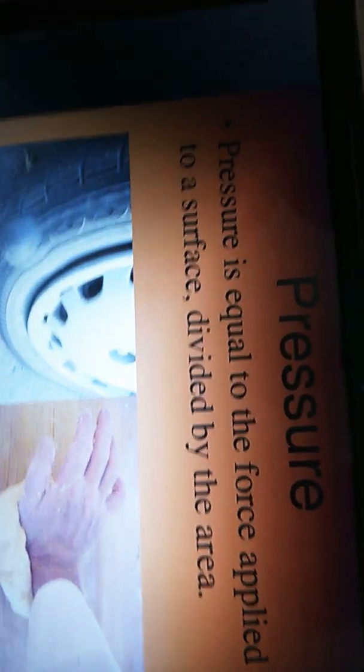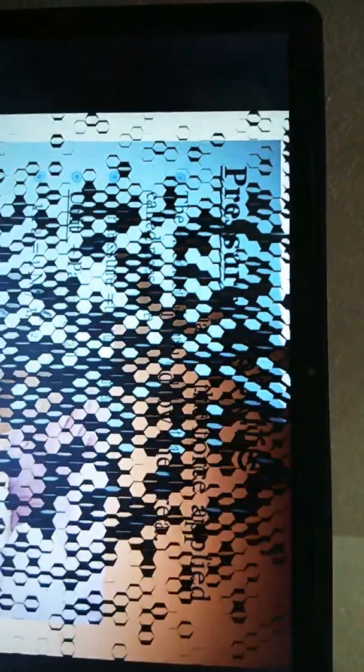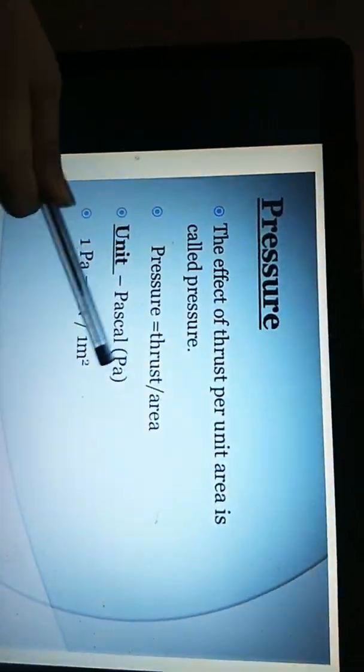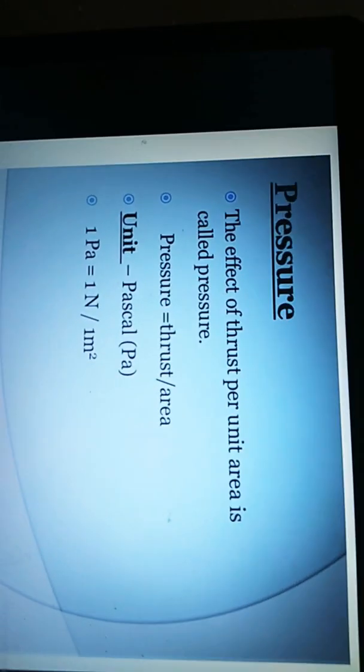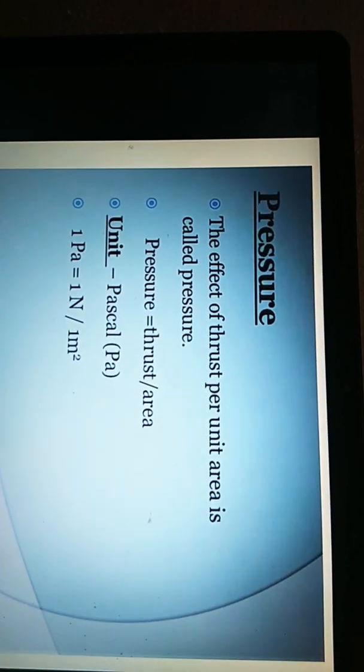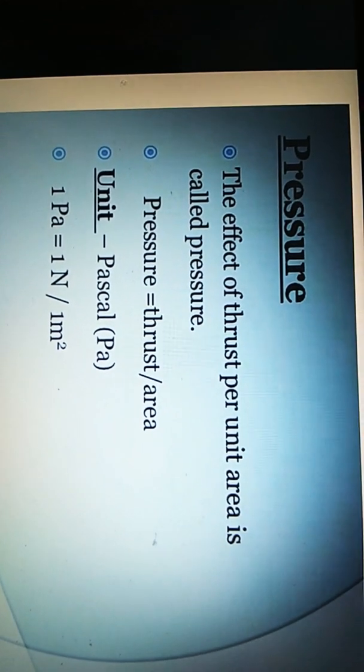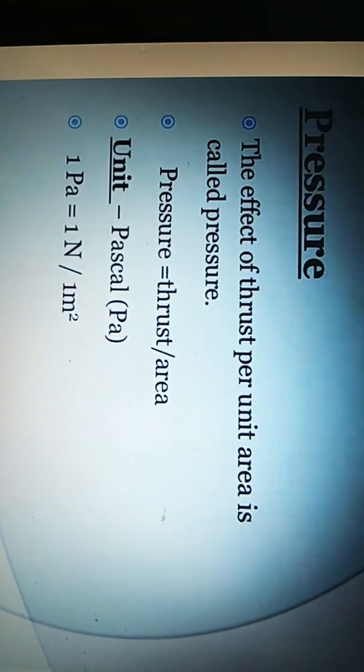Now we will learn about the units of pressure. The unit of pressure is Pascal. 1 Pascal is equal to Newton per meter square. The formula of pressure is thrust divided by area, or normal force divided by area.